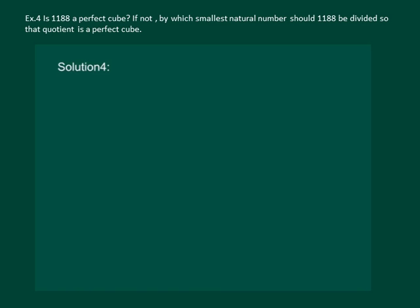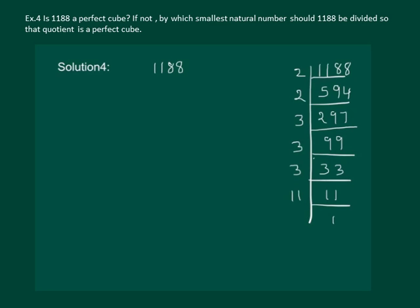We have 1188. So firstly, let us prime factorize 1188. After prime factorization, we can write 1188 equal to 2 into 2 into 3 into 3 into 3 into 11.